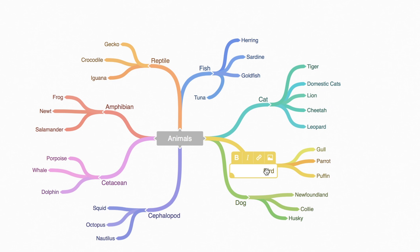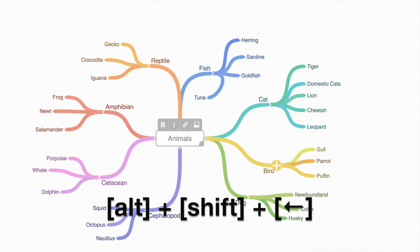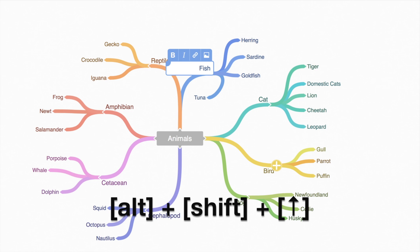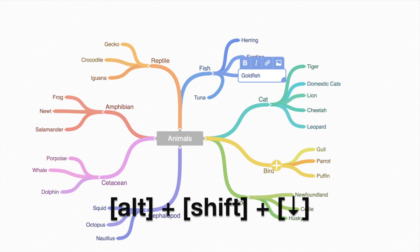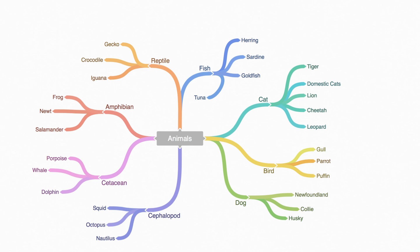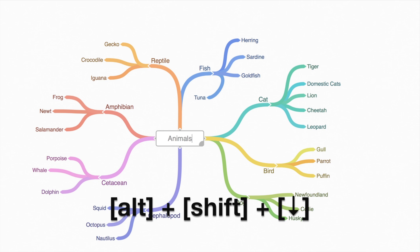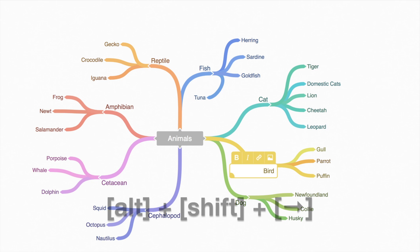You can also select items without using the mouse. Hold Alt and Shift, and then use the arrow keys. Using these keys also selects the root item if nothing is currently active, so you can edit without using the mouse at all.